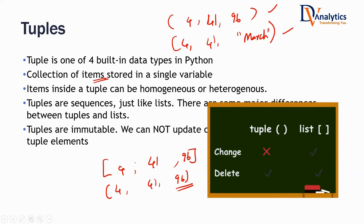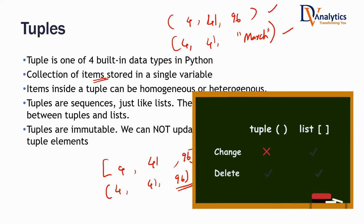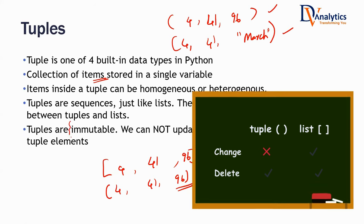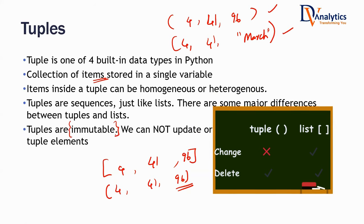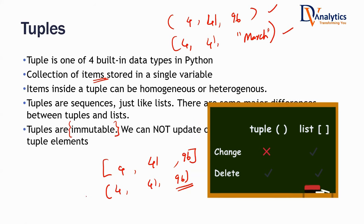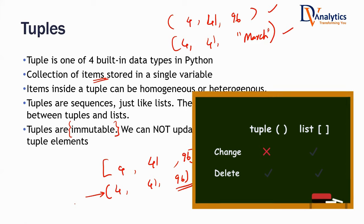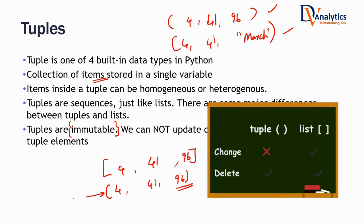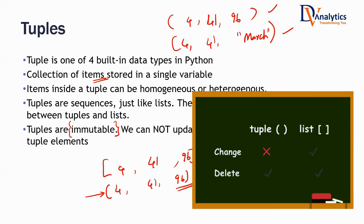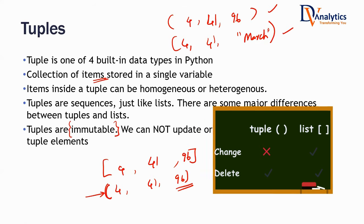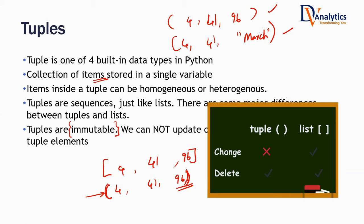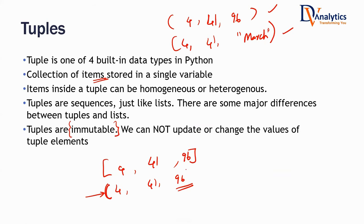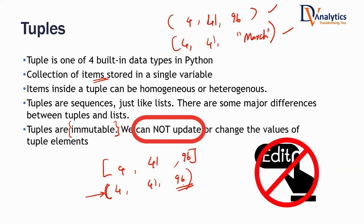One of the biggest differences between a tuple and a list is that tuples are immutable. Once you define a tuple, you cannot change that tuple at all. It is immutable — once you define it, either you can delete it or you can use it. You cannot edit it.